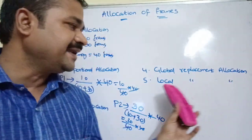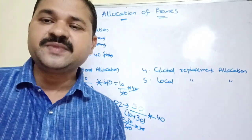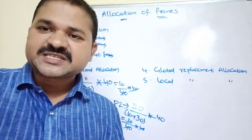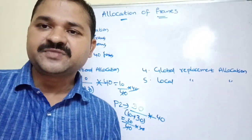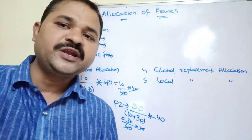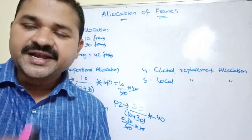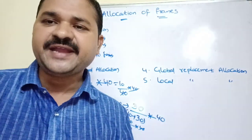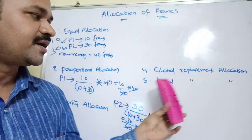Now let's see global replacement allocation and local replacement allocation, which are mainly relevant during page replacement. Whenever a CPU needs to execute a page, it checks if that page is in main memory. If not, a page fault occurs and the OS loads the page from secondary memory. If main memory is full, one existing page must be replaced using algorithms like FIFO, OPT, or LRU — these fall under either global or local replacement allocation.